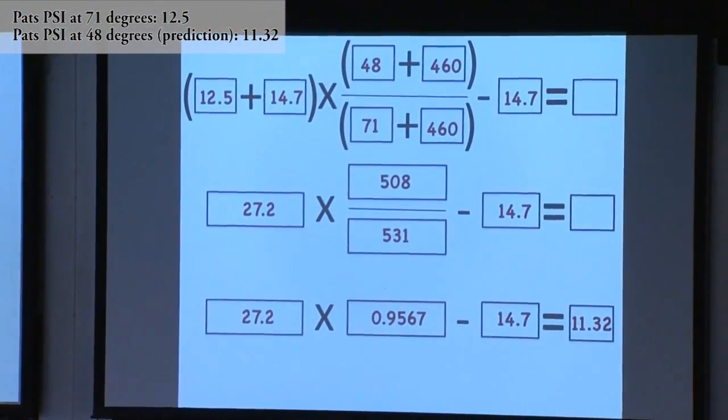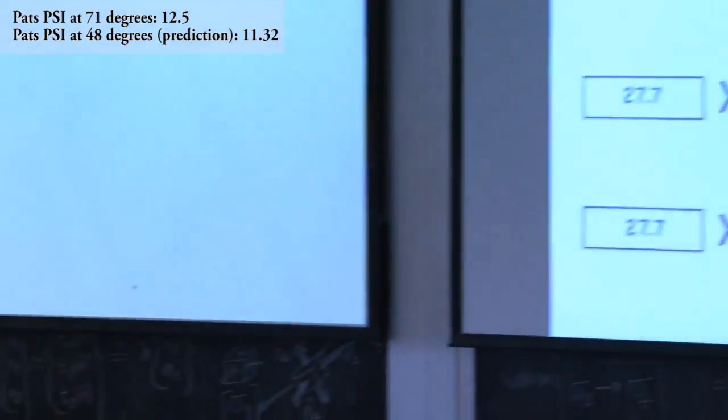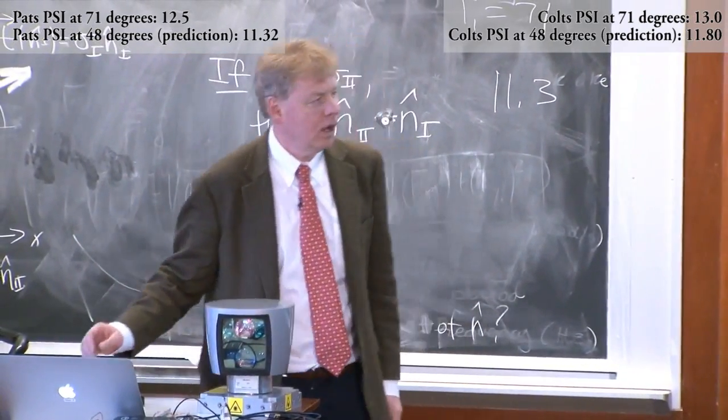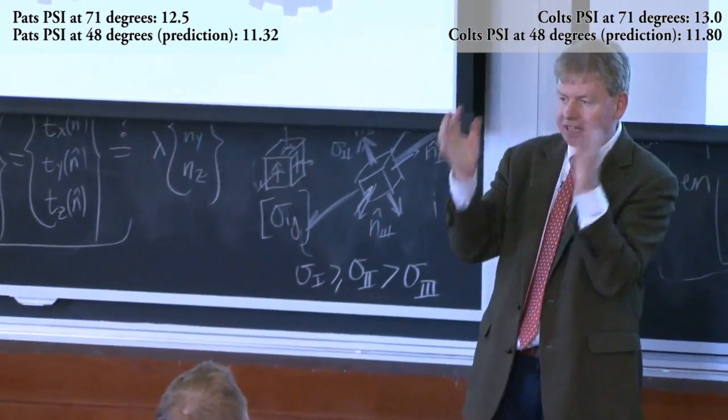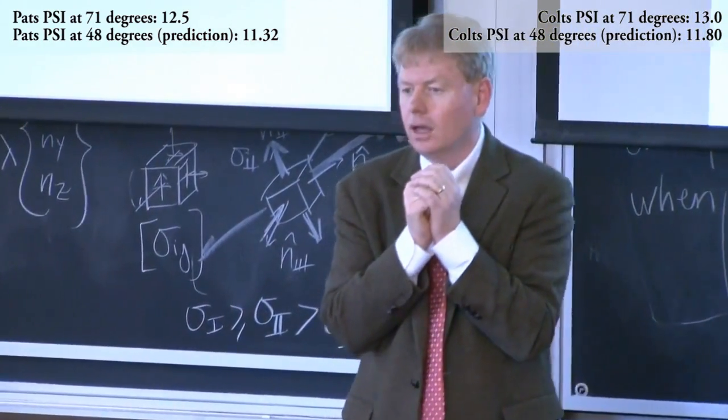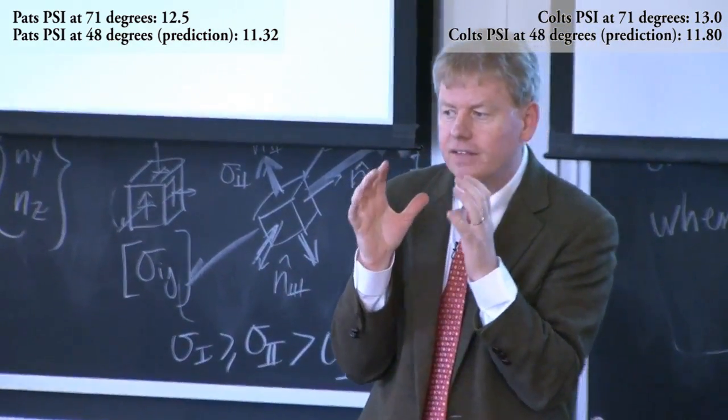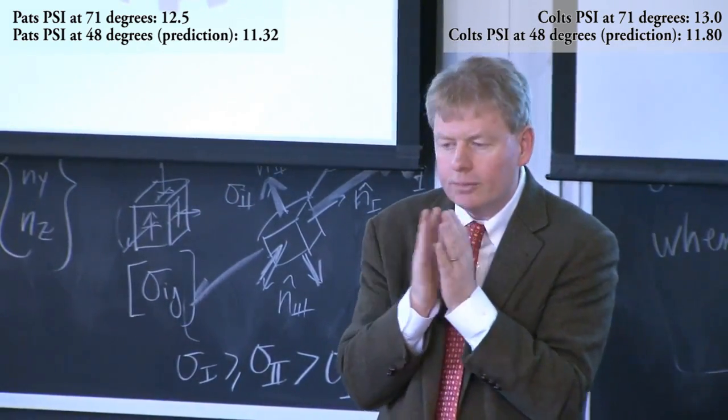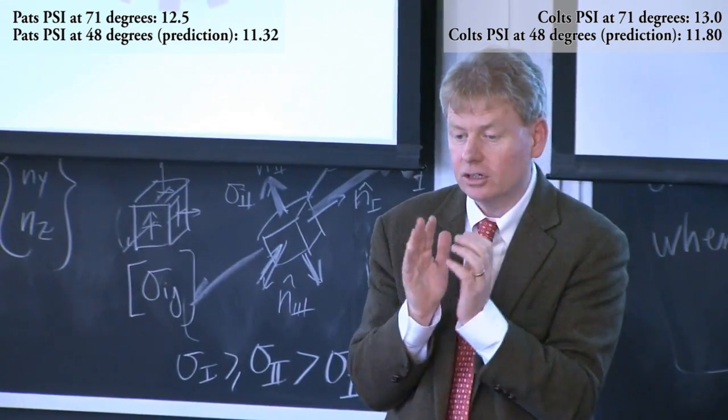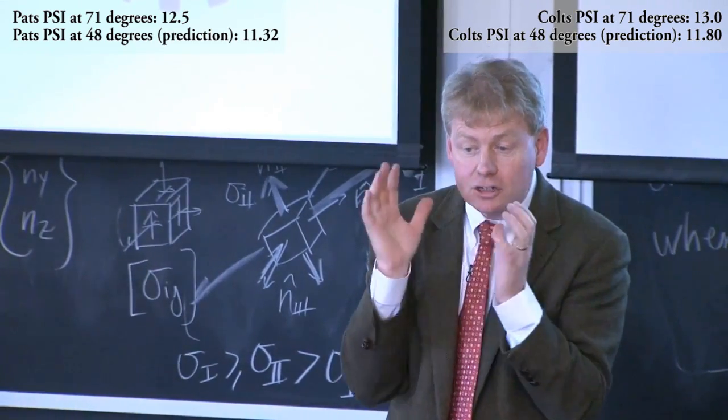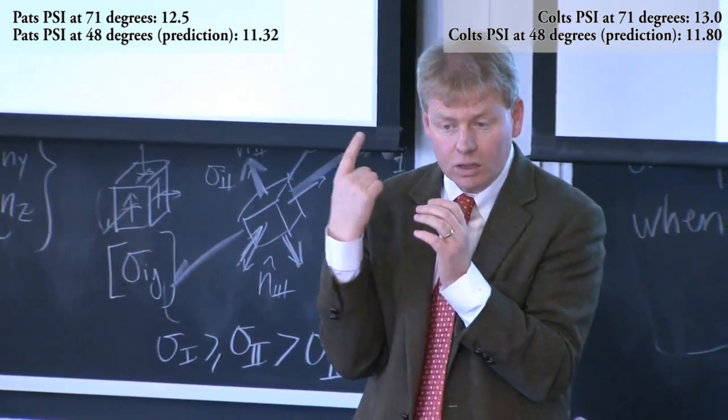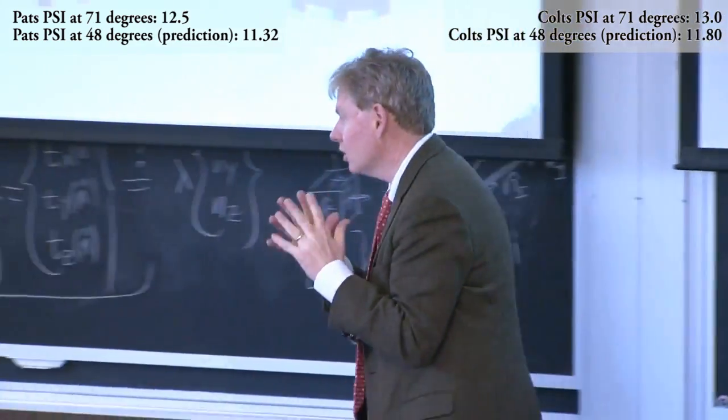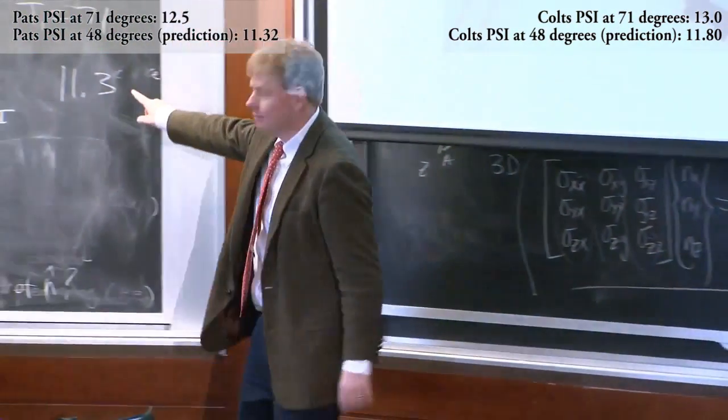The second ball we made 13 PSI. What do you get? 11.8. That's what the Colts balls should be. The Colts intercepted a ball in the first half. It felt different, didn't feel right. There was this rumor that maybe the Patriots were doing something to the balls. So they measured it on the sidelines. When they measured the Patriots ball on the sidelines with one of the gauges, they measured 11.3.